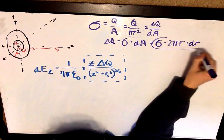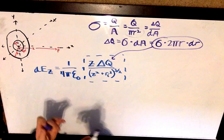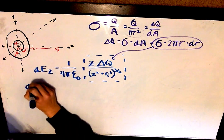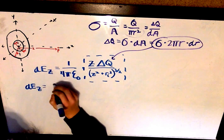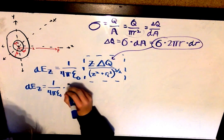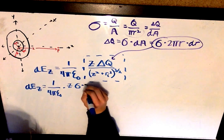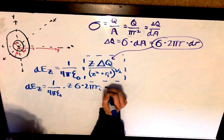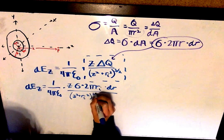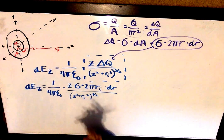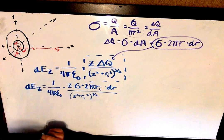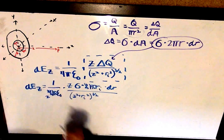We substitute this in for delta q. Doing that, we get the equation: the small portion of the electric field in the z-direction equals 1 over 4π ε₀ times z times area charge density times 2πr dr, all over (z² + Ri²) to the 3/2. From here, we can cancel some factors: the π's cancel, and the 2 cancels with the 4, leaving a 2 in the denominator.